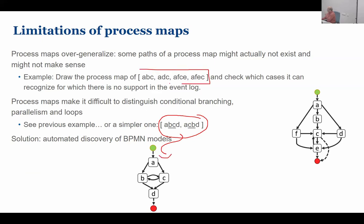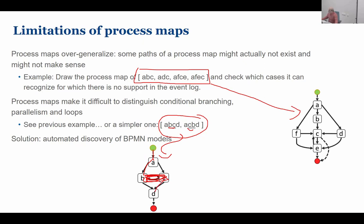I notice there is a loop: from B I can go to C, and from C I can go to B. Yet these two activities are never repeated — I never saw A, C, A, C, A, C. The process map gives the impression that after starting, I can do B then C then B then C repeatedly and then D. But it's not true — there is no repetition in the event log. It's an illusion.